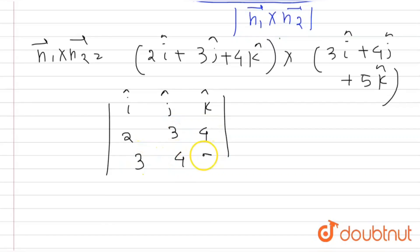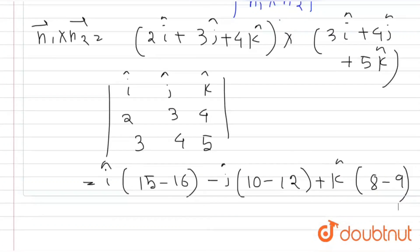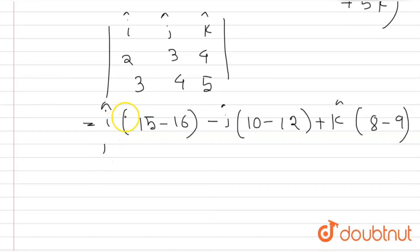So 15 minus 16, 10 minus 12, 8 minus 9, which equals to minus i cap minus 2j cap minus k cap.